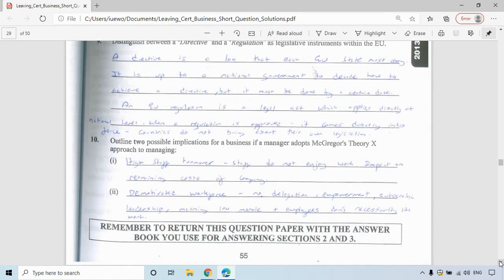Question 10, outline two possible implications for a business if a manager adopts McGregor's Theory X approach to managing. Remember Douglas McGregor in 1960 in unit three motivation. He added two theories of motivation, X and Y. With X, managers feel workers are only motivated by money. Therefore, high staff turnover. Staff do not enjoy work. For the business, it could impact training costs for the company. You'll have a demotivated workforce, no delegation, empowerment being autocratic leadership, low morale. Employees don't necessarily like working there either.